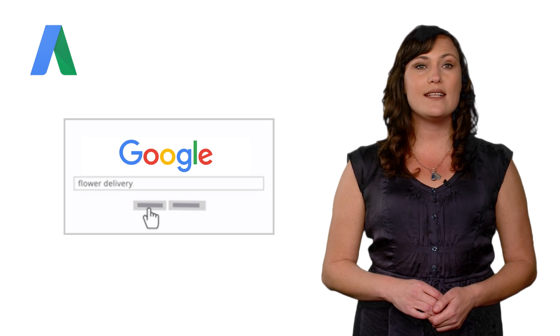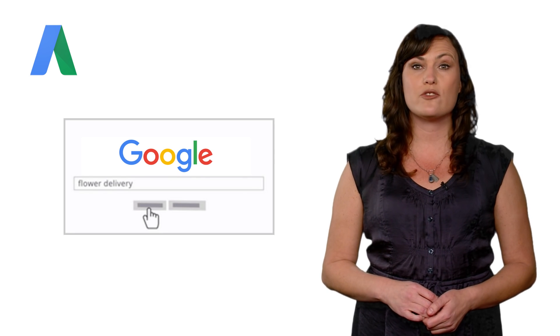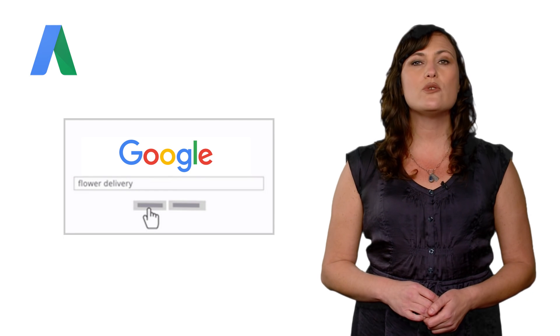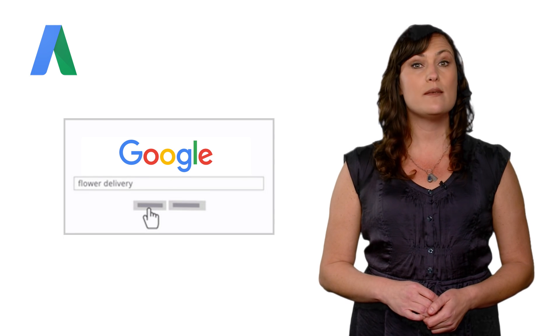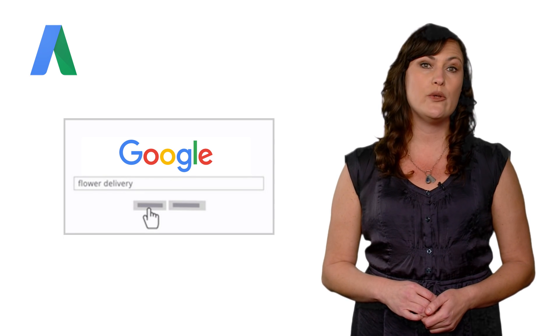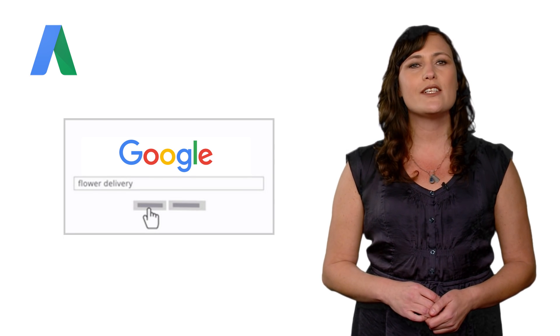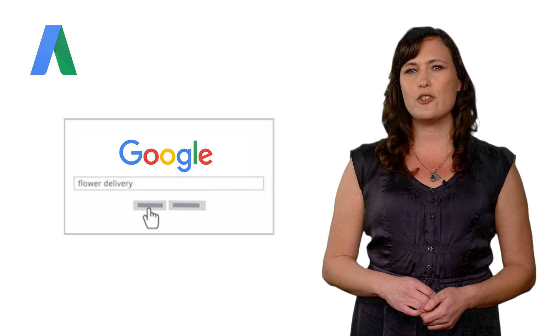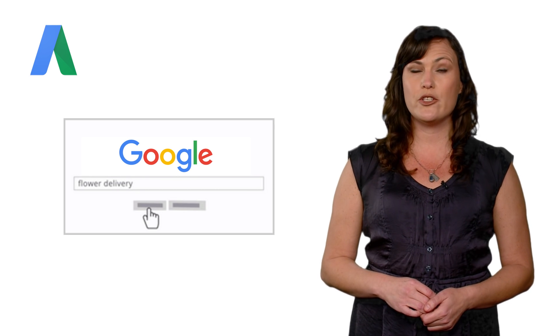Hi, it's Allie with AdWords, here with one of the most important steps in creating an effective AdWords campaign: choosing the right keywords. For your ads to show when people search for products or services like yours, you'll want to choose keywords that are similar to the words or phrases people might use when conducting their search. When someone's search terms are similar to your keywords, your ad can be eligible to show next to their search results.